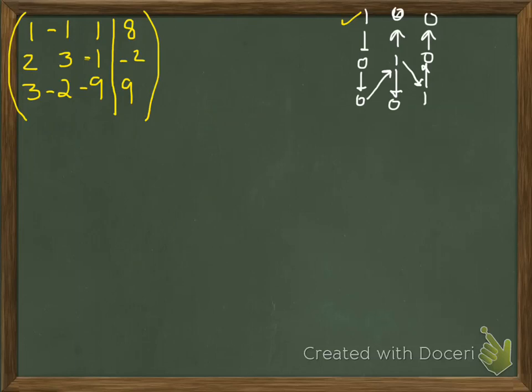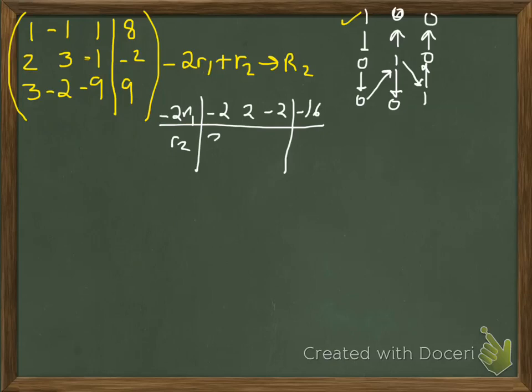Okay, now I need to make row 2, column 1 a 0. So if we're making something 0 in column 1, we're going to use row 1. So we're going to use row 1, and we're going to do the opposite of 2, which is negative 2. So we're going to do negative 2, row 1, add that to row 2 to replace row 2. Okay, so negative 2, row 1, and then add that to row 2.